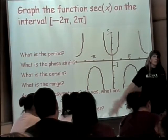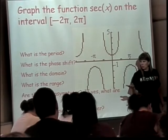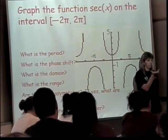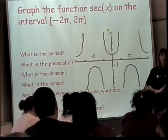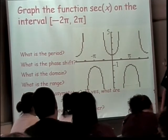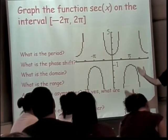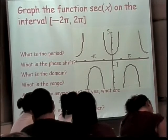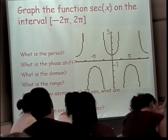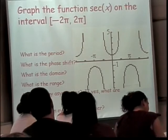So what's the period of this? Given that it's related to the cosine, what should the period be? What was the period of the cosine function? It was 2π — it took a whole 2π to get through everything. So what's the period of this thing? 2π.